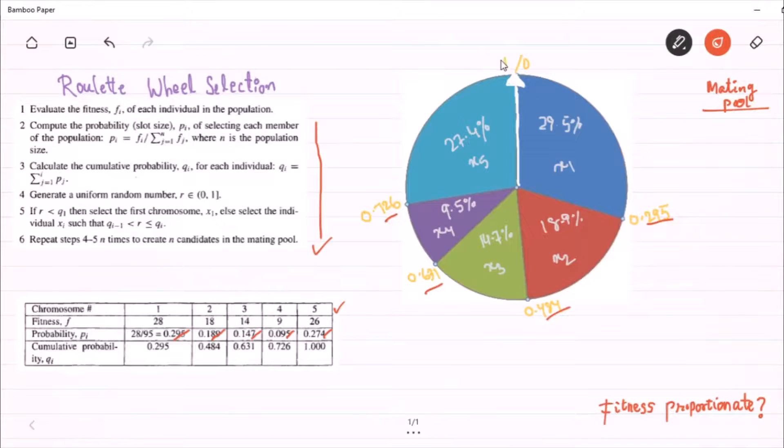And the wheel is normalized to value 1. Start from 0 and end at 1. Now, initially, the pointer is pointing to 0. And we have to spin the wheel. And when the wheel stops,